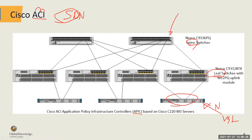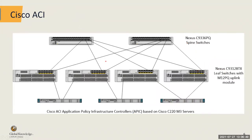Can you SSH into the spine and look at it? Sure. But you cannot configure the spine while on the spine. Can you SSH into the leaf and look at it? Yes — show commands, debugs — but there's no configuration done on it. The APIC configures everything all the way through. Where do we plug in all our end node devices? Whether it's a Windows server, Linux server, VMware, a Microsoft hypervisor, a load balancer, a firewall — everything is plugged into the leaf, not the spine.